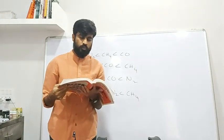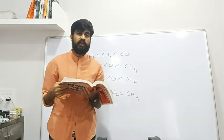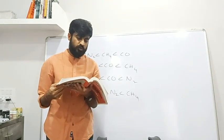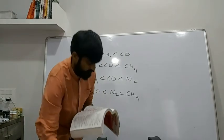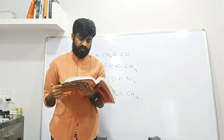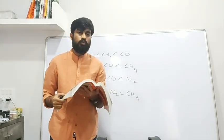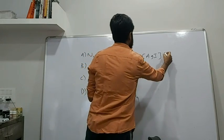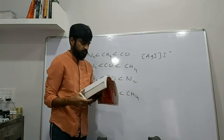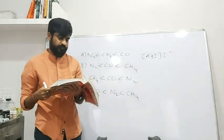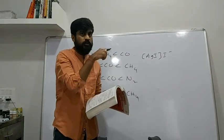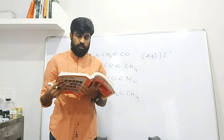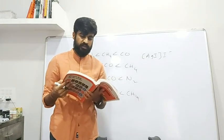Next question: The number of moles of lead nitrate needed to coagulate two moles of colloidal AgI (with adsorbed I⁻ ions) is — Option A: 2. Option B: 1. Option C: 1/2. Option D: 2/3.